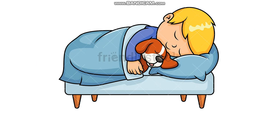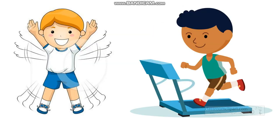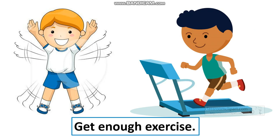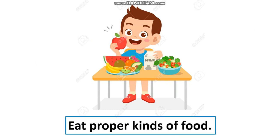We also have habits from last time that we should always do: get enough sleep, get enough exercise — like these kids who are working out — and eat proper kinds of food. Like this kid, he is eating a variety of food: fruits, vegetables, and milk.